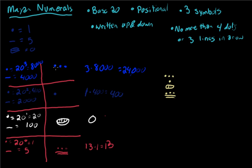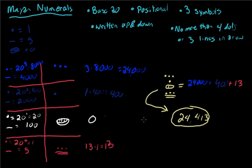So the number that we have, to translate it to the Arabic numerals, all we have to do is add these up. So we'll say this number right here equals 24,000 plus 400 plus 13. Well if we add those up, we get 24,413. So this right here is 24,413.